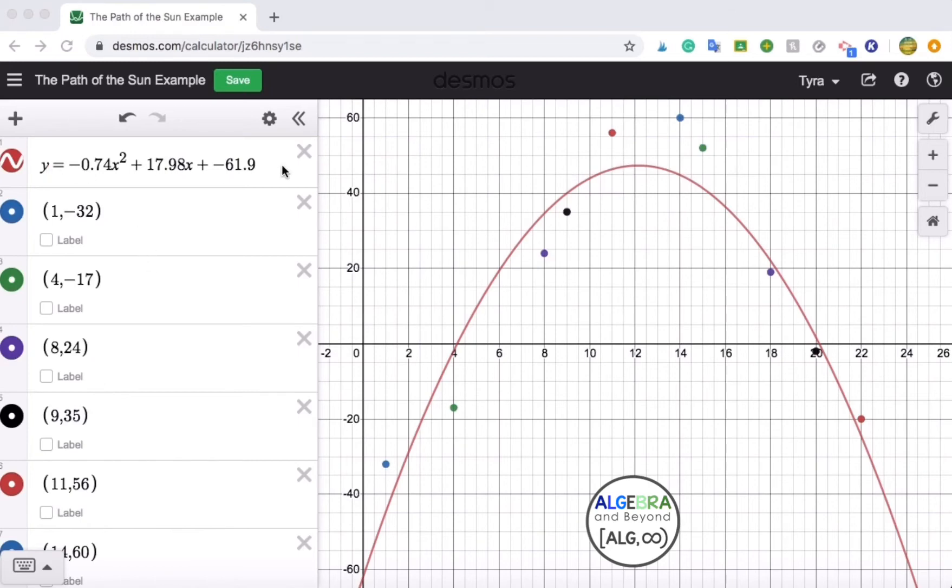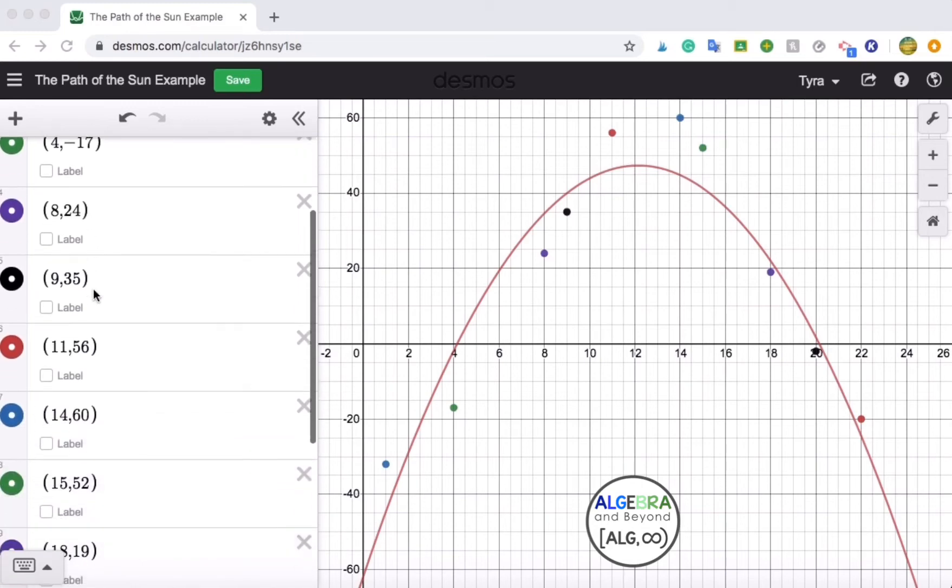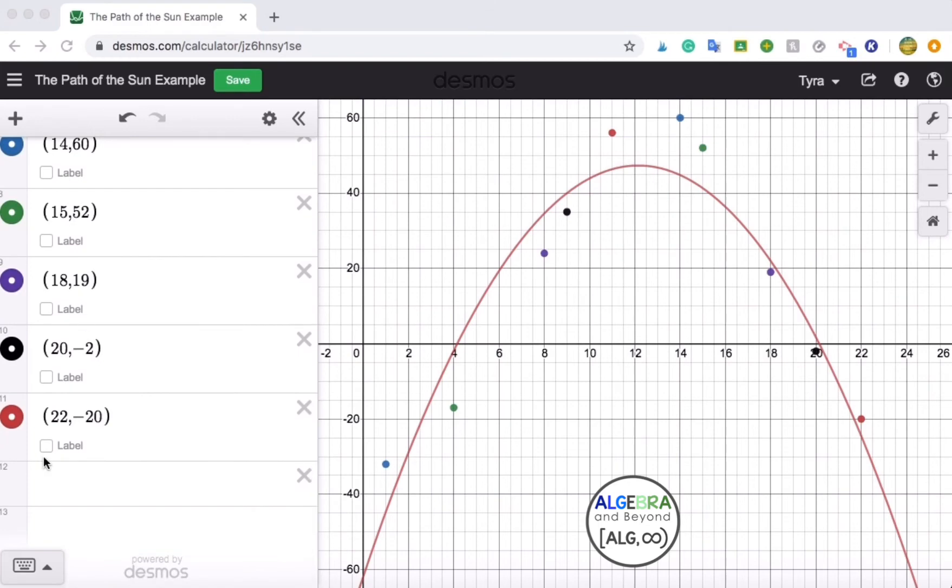You can see in the first line here I have the quadratic equation, and then I have my ordered pairs here and so forth. I typed all of the ordered pairs in, and you can actually click on that too if you want one of them to be labeled.